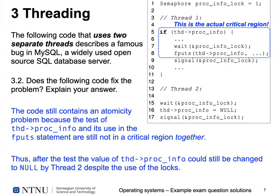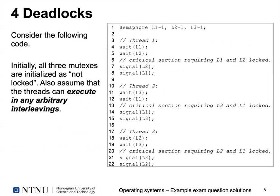Question four was about deadlocks. We had three threads using a number of locks. Thread one executes code in lines 4 to 8, thread two in lines 11 to 15, and thread three in lines 18 to 22. We assume all three mutexes are initialized as non-locked, and that threads can execute in any arbitrary interleaving — switching between lines, or in practice between machine instructions implementing those instructions.